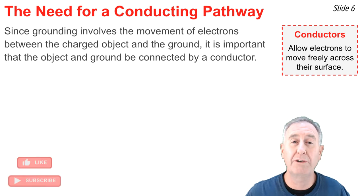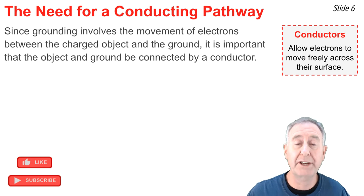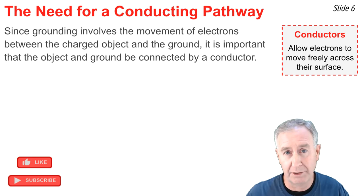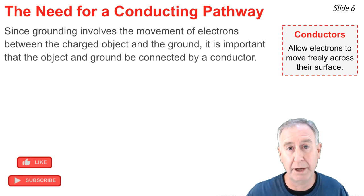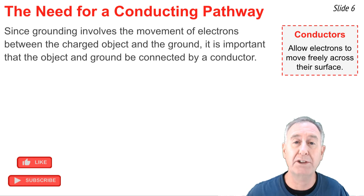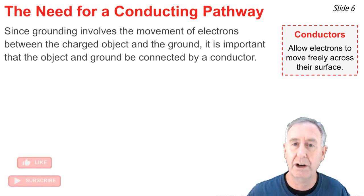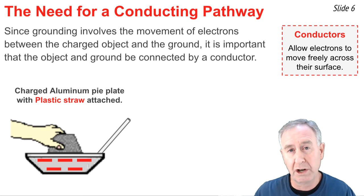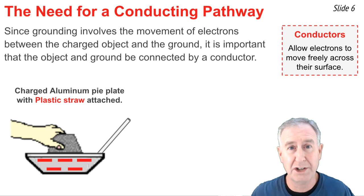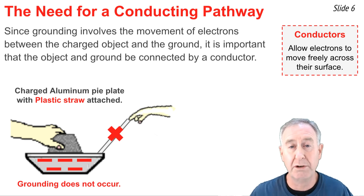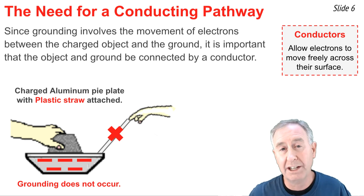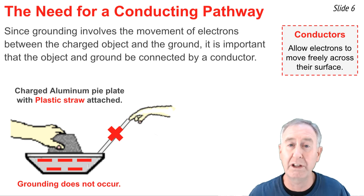Since grounding involves the transfer or movement of electrons between the charged object and the ground, it's important that they be connected by a conducting pathway. A conductor is a type of material that allows for the free flow of electrons across its surface. In this diagram, we see a charged aluminum pie plate, charged negatively, and a plastic straw that is connected to its surface. If I were to touch the end of that plastic straw, grounding would not occur because plastic is an insulator and it doesn't allow for the free flow of electrons.